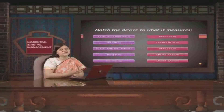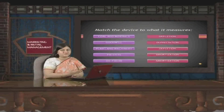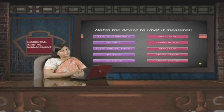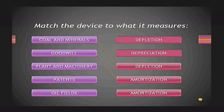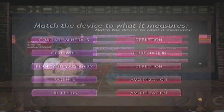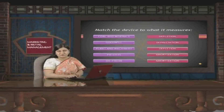Now we will do a short exercise to ascertain whether we have understood these concepts. Coals and minerals are natural resources which cannot be replaced, so we use depletion. Goodwill is an intangible asset, so the method used is amortization. Plant and machinery are tangible assets, so we use depreciation. Patents use amortization since they are intangible assets. Oil fields use depletion. The concepts relating to depreciation, depletion, and amortization should now be very clear.